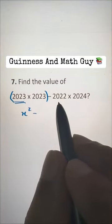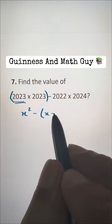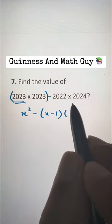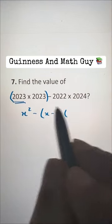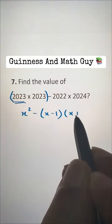Minus this 2022 is X minus 1, right? 1 less than 2023 and times this 2024 is 1 greater than 2023. So X plus 1.